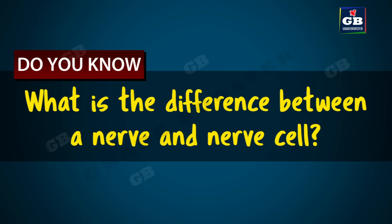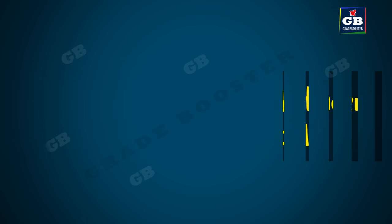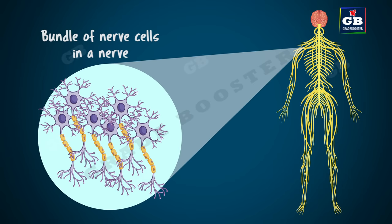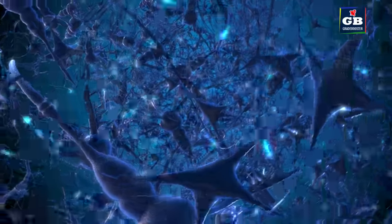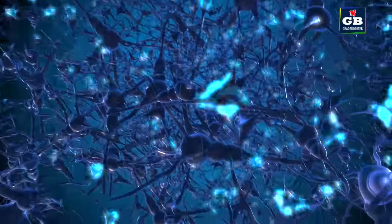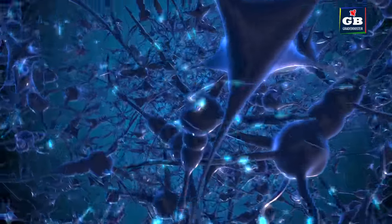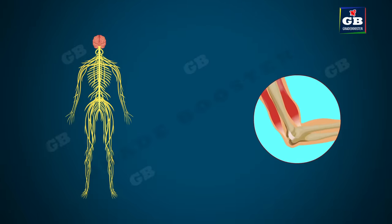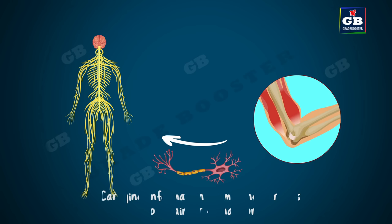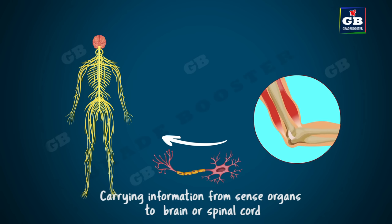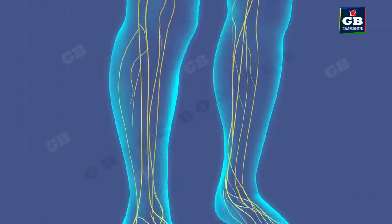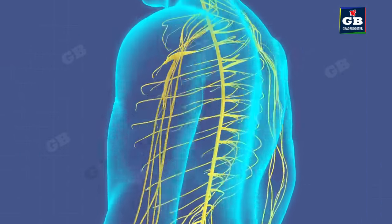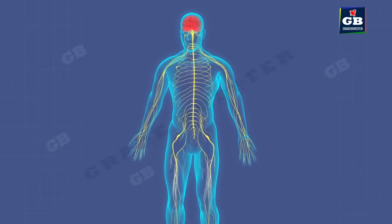A nerve is a bundle of nerve cells — many nerve fibers bound together by connective tissue make up a nerve. Nervous cells carry information in the form of electrical impulses, also called nerve impulses. Nervous cells perform two main functions: carrying impulses from sense organs to the brain or spinal cord, and carrying impulses from the brain or spinal cord to muscles. Nervous tissue helps animals respond quickly to stimuli.